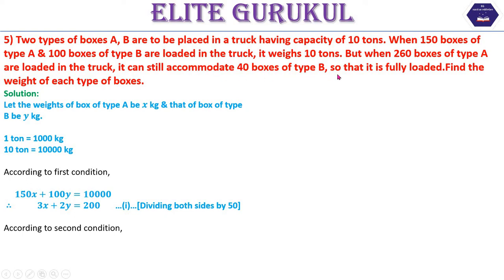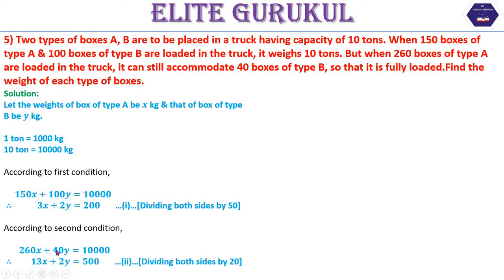According to the second condition: when 260 boxes of type A are loaded, the truck can still accommodate 40 boxes of type B and is then fully loaded. So 260x plus 40y equals 10,000. Dividing by 20 gives 13x plus 2y equals 500. We now have two simplified equations to solve simultaneously.